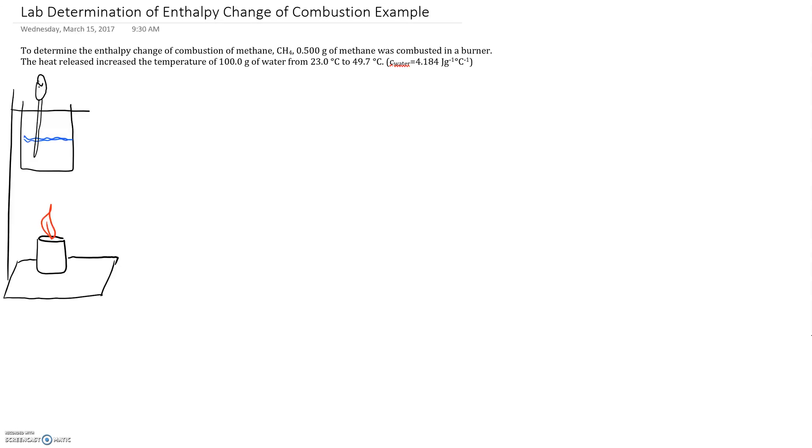We're going to have this setup with a ring stand. We've got the methane in the bottom right down here, and then we've got some water that's going to get heated up and that's the part that I'm going to be measuring. If we take a look at this problem, it's telling us what we've got. It says that we're determining it for methane CH4 and that we have 0.500 grams of that methane.